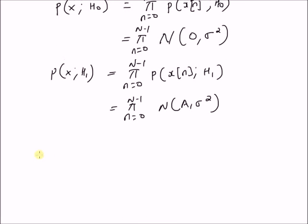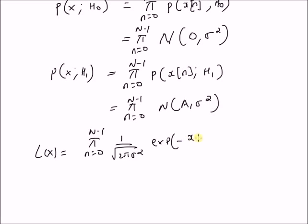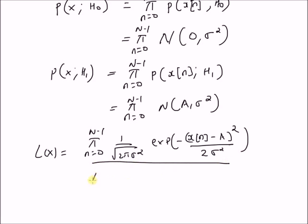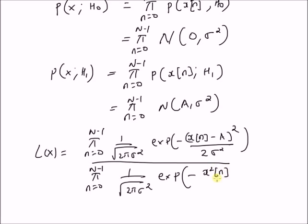The likelihood ratio test is the ratio of: the numerator being the product from n=0 to N-1 of (1 / sqrt(2*pi*sigma^2)) * exp(-(x(n) - A)^2 / (2*sigma^2)), and the denominator being the product from n=0 to N-1 of (1 / sqrt(2*pi*sigma^2)) * exp(-x(n)^2 / (2*sigma^2)), and this should be greater than threshold gamma.